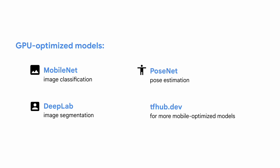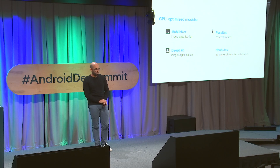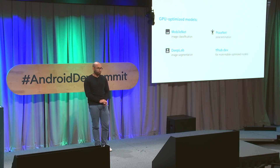That code creates a TensorFlow Lite instance using the GPU delegate and enables hardware acceleration. But in addition to enabling it in code, you can also adapt your model to leverage the GPU. Consider using a model that is optimized and built to take advantage of GPU acceleration. For example, MobileNet for image classification, DeepLab for image segmentation, or PoseNet for pose estimation — an alternative to BlazePose that is optimized for GPU acceleration, though it detects fewer key points than BlazePose.